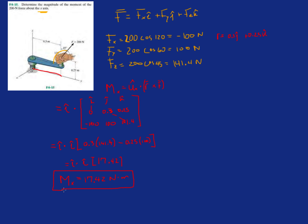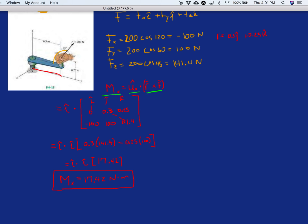So again, the notation is: they asked me to calculate the moment about some axis — find the unit vector of that axis, dotted with the moment about the origin. Moment about some axis equals unit vector of that axis, dotted with the moment about the origin. Alright guys, thanks for your patience. Hope these videos are helping, and keep up the good work. Have a good one.